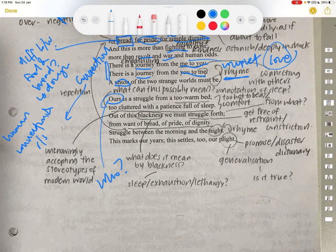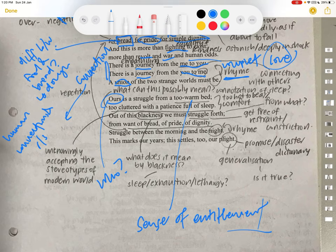Too warm bed. This could possibly mean a sense of entitlement, because it's too warm. Warm beds actually signify comfort. But a too warm bed, maybe you're entitled already. You actually take it for granted. Too cluttered with a patience full of sleep. So it shows again the entitlement. Full of sleep. It's a privilege to be able to sleep.